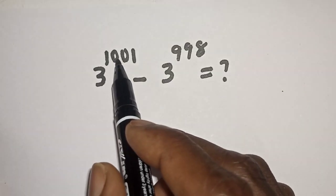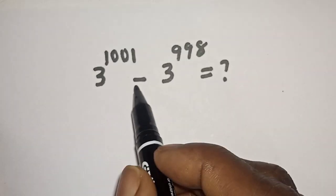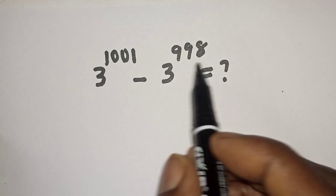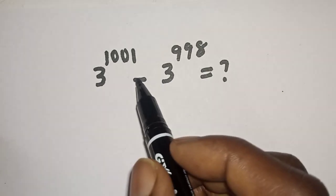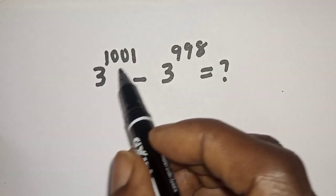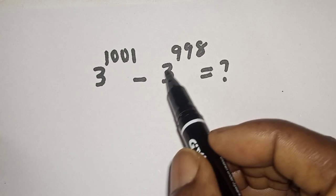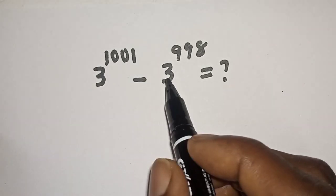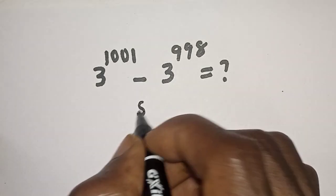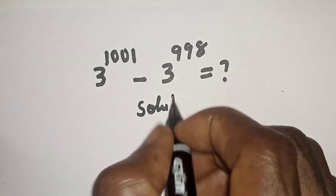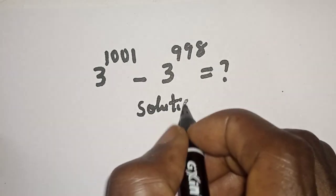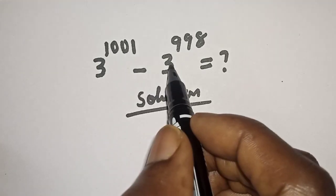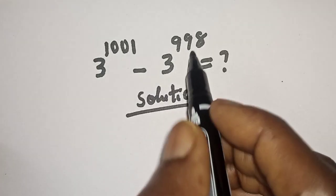3 raised to power 1001 minus 3 raised to power 998 is equal to what? Hi everyone, welcome to my class. In this class we quickly want to simplify this nice math problem. Solution: here is 3 raised to power 1001 minus 3 raised to power 998.